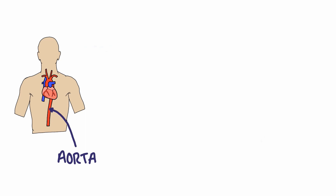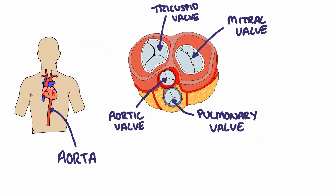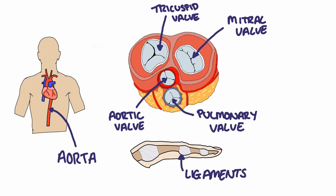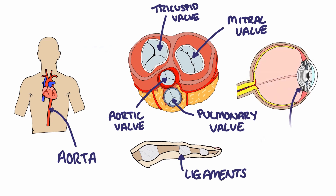These elastic fibers are found throughout the body. However, they are particularly abundant in the aorta, the valves of the heart, within ligaments, and the suspensory ligaments inside the eye that are responsible for holding the lens in place.